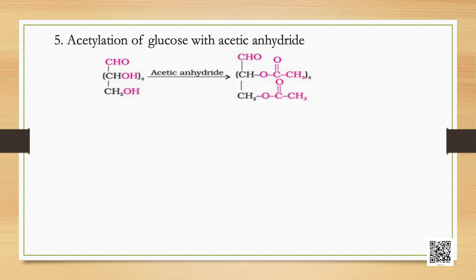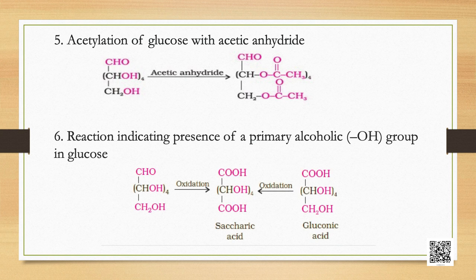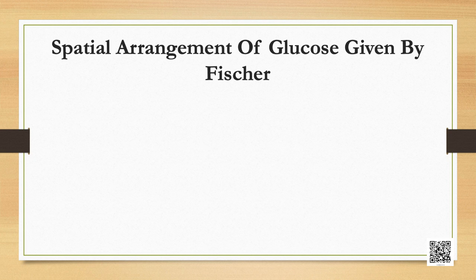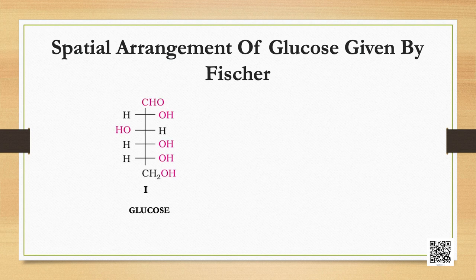Fifth, acetylation of glucose with acetic anhydride gives glucose pentaacetate, which confirms the presence of five OH groups; since it exists as a stable compound, five OH groups should be attached to different carbon atoms. Sixth, on oxidation with nitric acid, glucose as well as gluconic acid both yield a dicarboxylic acid, saccharic acid, indicating the presence of a primary alcoholic group in glucose. The exact spatial arrangement of different OH groups was given by Fischer; its configuration is correctly represented as structure one.